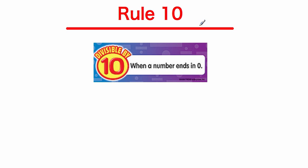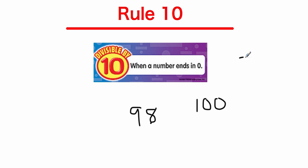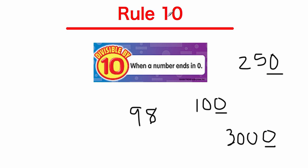The last rule we're going to talk about is the rule for 10 — and it might be the easiest rule of all. To decide if something is divisible by 10, it has to end in a 0. So 98 would not work, but 100 would work, 250 would work, and 3,000 would work. Any number that ends in a 0 is always going to be divisible by 10.